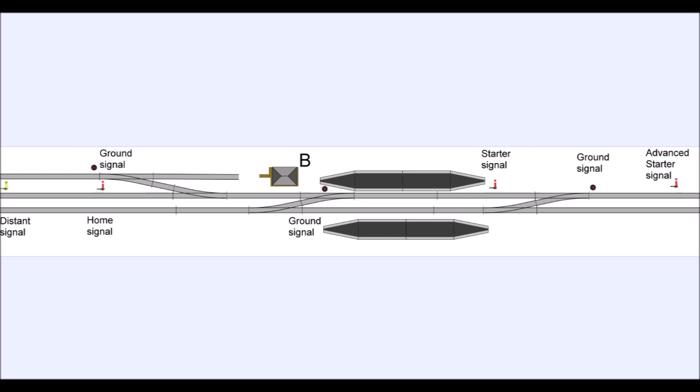So the engine can uncouple, run forward, but stop at the advanced starter. Now the ground signal then is used for the engine to reverse. The ground signal shows that the points have been thrown, and the engine reverses back over the crossover, onto the other line, all the way down to beyond the second crossover. It can then reverse back onto the rear of the train. And the ground signal then allows it to reverse backwards into the siding, and shunt a wagon into that little siding next to the signal box.